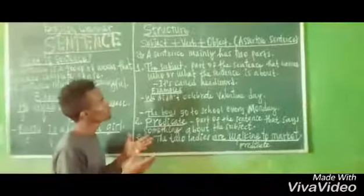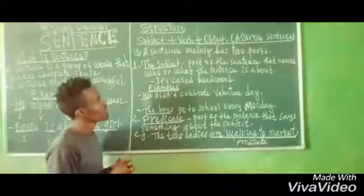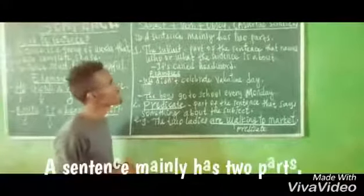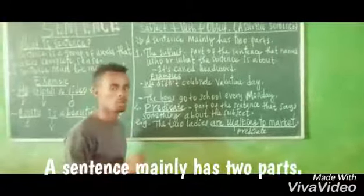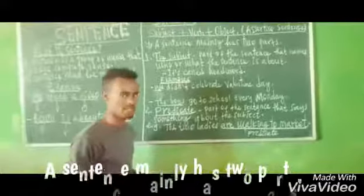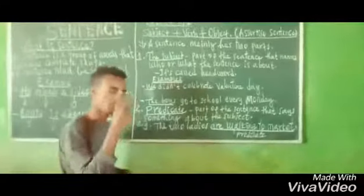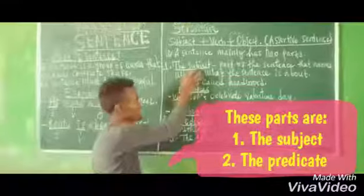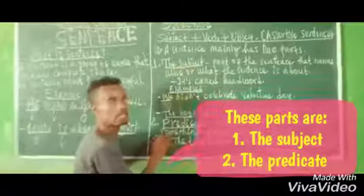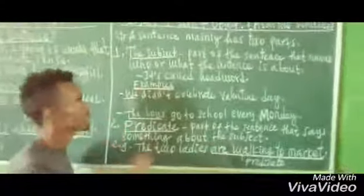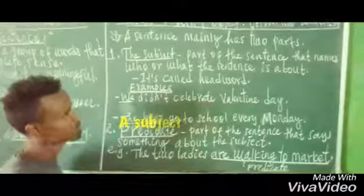When we come to the main structure of sentences, a sentence mainly has two parts. These two parts are the subject and the predicate.